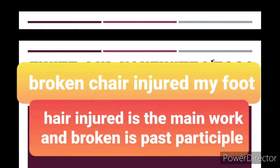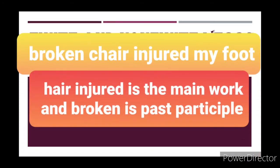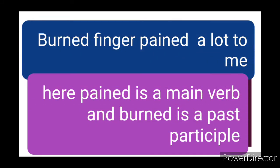Next, past participle. First example: 'Broken chair injured my foot.' Here, 'broken' is a past participle and 'injured' is the main verb. Second example of past participle: 'Burned finger pained a lot to me.' Here, 'burned' is a past participle while 'pained' is the main verb.